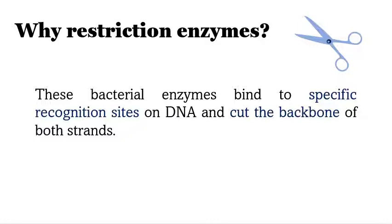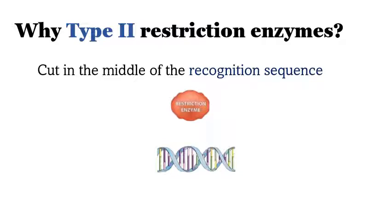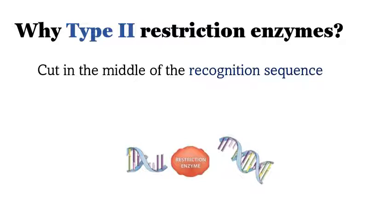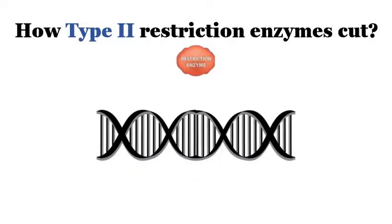Out of these types, Type 2 restriction enzymes have specific qualities which are required for recombinant DNA technology. These are bacterial enzymes that bind to specific recognition sites on DNA and cut the backbone of both strands. They are obtained from bacteria but used in recombinant DNA technology. Type 2 restriction enzymes cut in the middle of the recognition site.